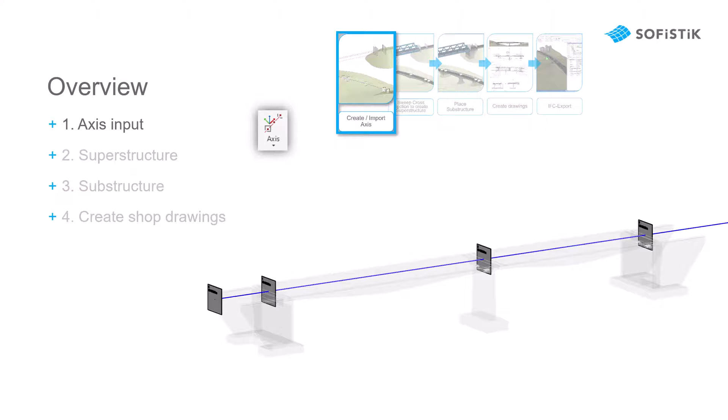This will include horizontal and vertical alignment information, as well as placements, meaning specific points along the stationing of the axis.